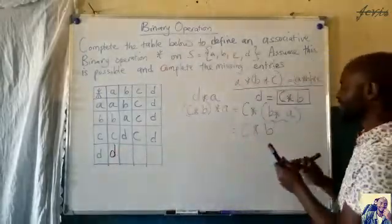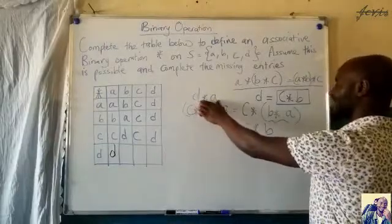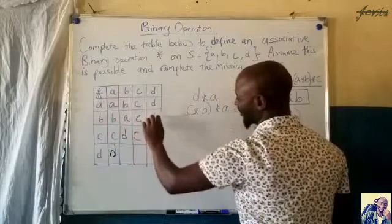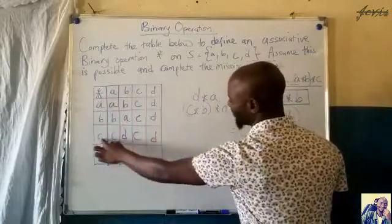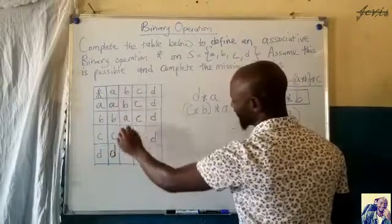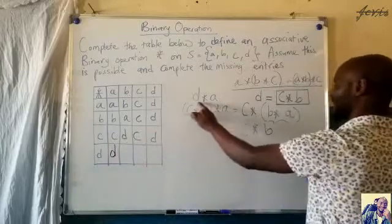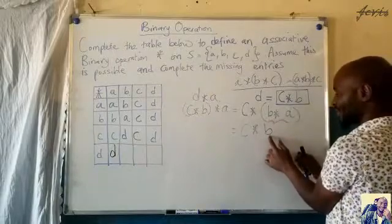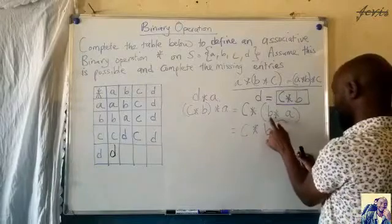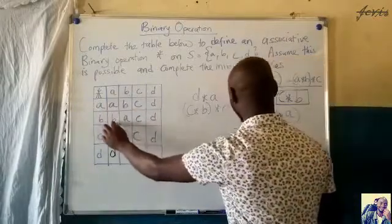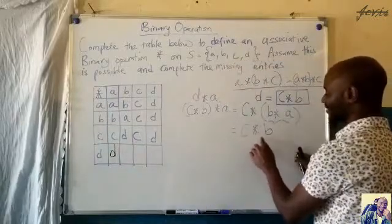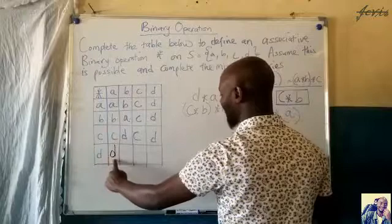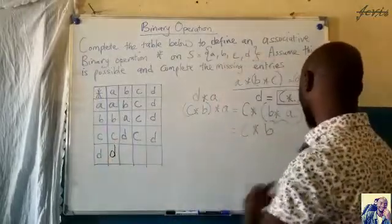So I've used C operate B, which gives me D. Wherever there is D, I replace it and try to group again. I can replace B operate A — which is B — and then find C operate B, which gives D. So D operate A is equal to D.